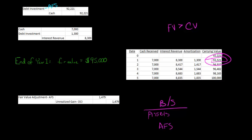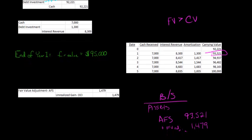But then we're going to add the fair value adjustment - we're going to add that $1,479. If you add them together, the net amount is $95,000, which is the fair value. So we have marked this to market. That's what we're doing when we're debiting this fair value adjustment account. We are marking this to market.